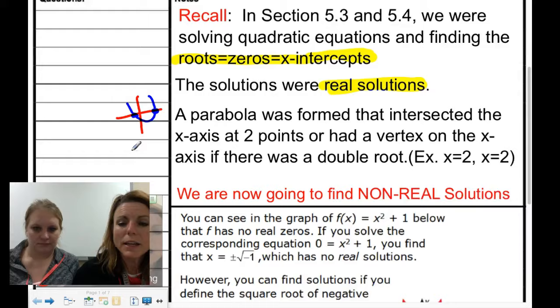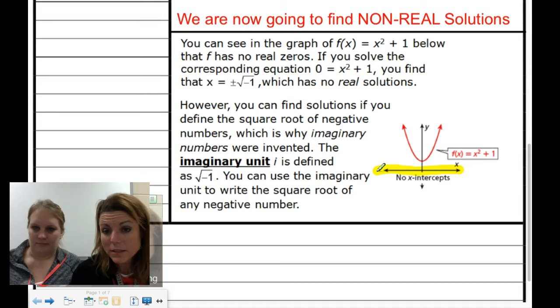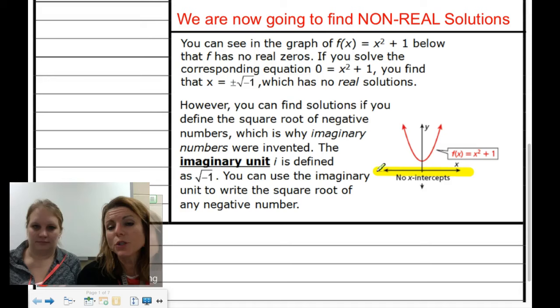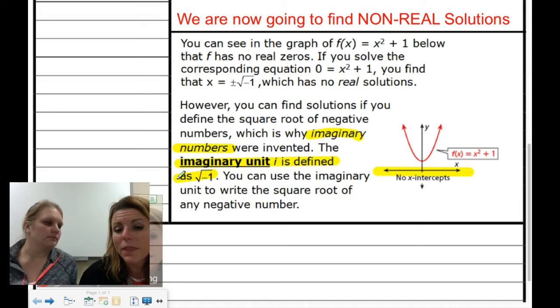This section, we're talking about non-real solutions. If you look at the graph, notice that parabola does not cross the x-axis or touch it at all. When that is the case, there are no real solutions, and we have to start talking about non-real solutions or imaginary numbers. Notice it says an imaginary unit i is defined as the square root of negative 1. i equals the square root of negative 1. That is important to remember.